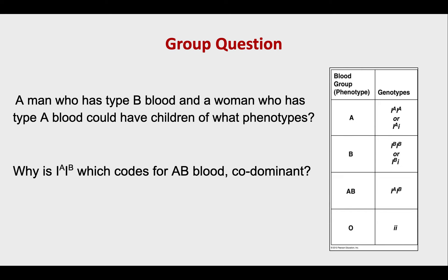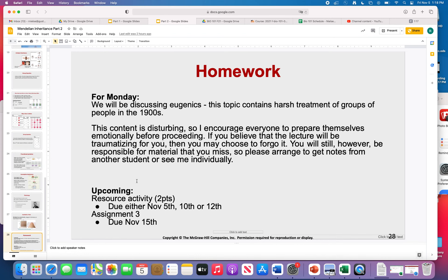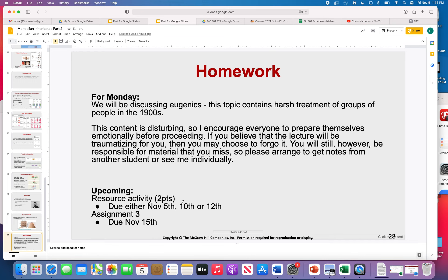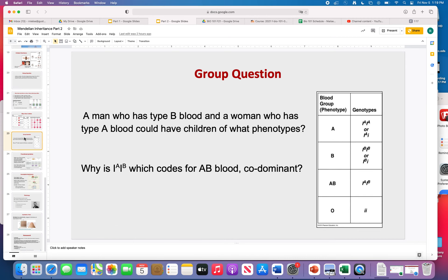I have another group question — give it a shot in the last two minutes and we may come back to it on Monday. Before you leave: the homework is to watch the linked video at the bottom, a three-minute video on the difference between quantitative and qualitative traits — we'll review it on Monday. On Monday we'll also be talking about eugenics. I want to put a warning out there that this topic contains harsh treatment of groups of people in the 1900s, so come prepared knowing that. We'll watch a couple of videos and talk about it.